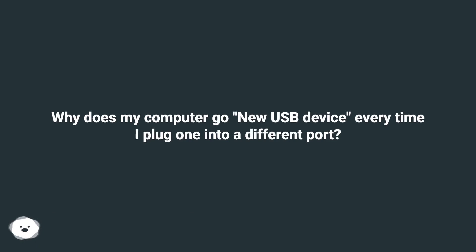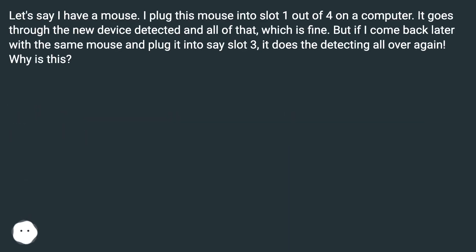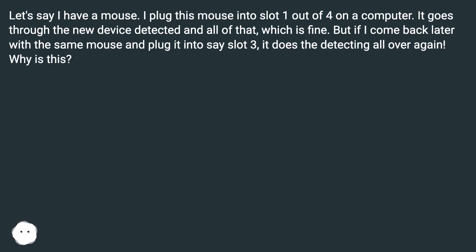Why does my computer say 'new USB device' every time I plug one into a different port? For example, I plug a mouse into slot 1 out of 4 on a computer, it goes through the new device detected process, which is fine. But if I come back later with the same mouse and plug it into slot 3, it does the detecting all over again. Why is this?